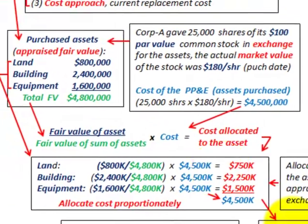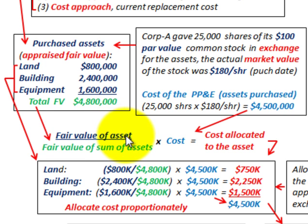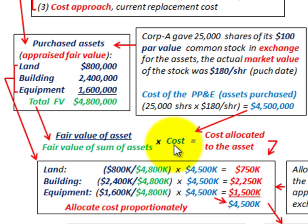To recap: the allocation formula is straightforward. The challenge is coming up with the appraised fair values of your assets and also establishing a proper market cost — the price you're going to pay for these assets — because it isn't always a cash deal, and you have to determine what your cost would be.